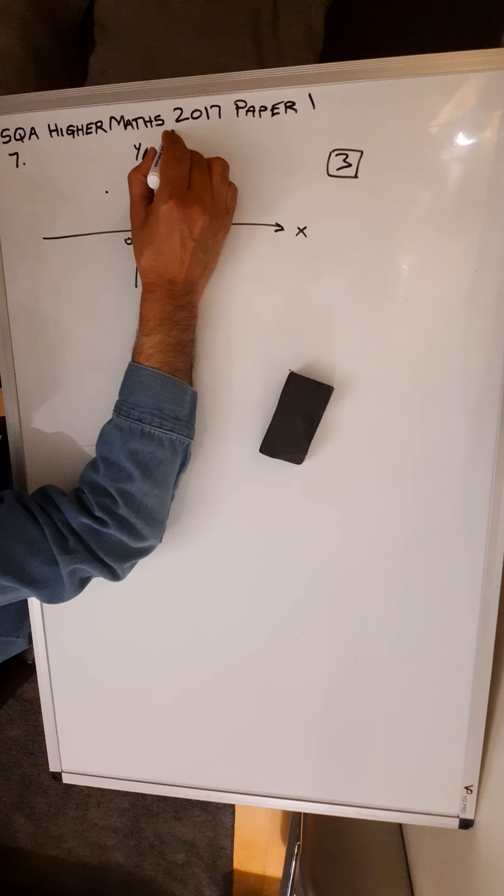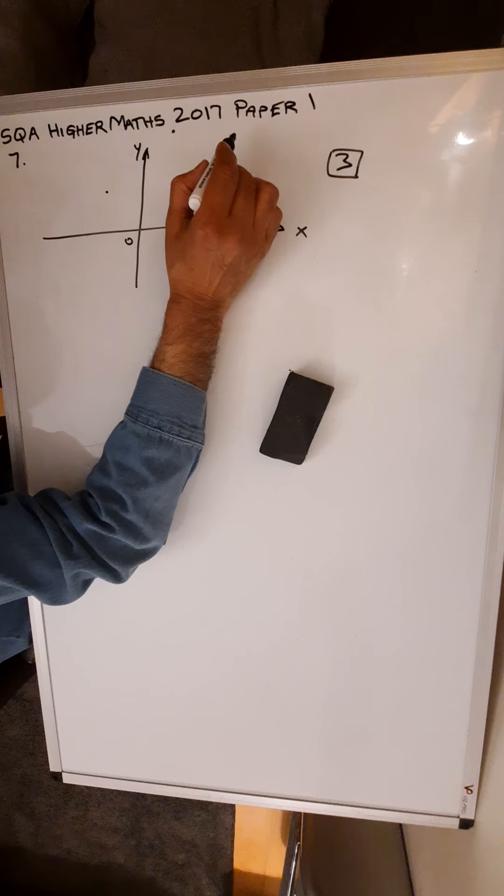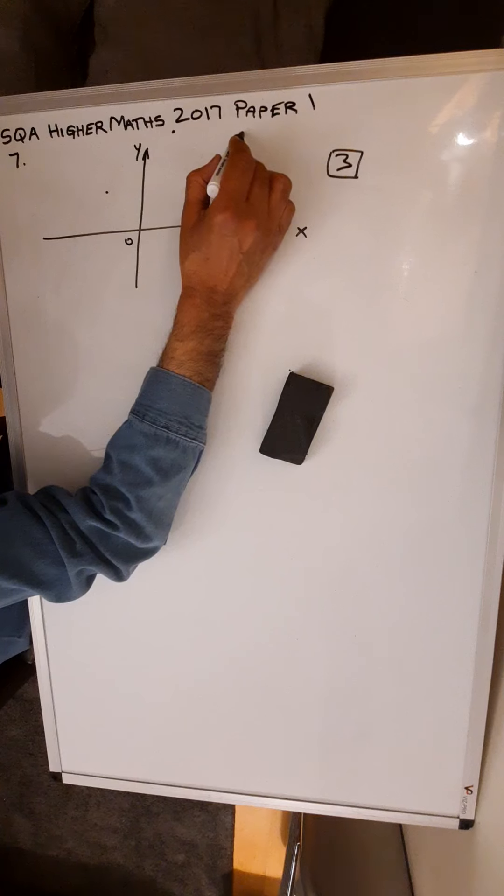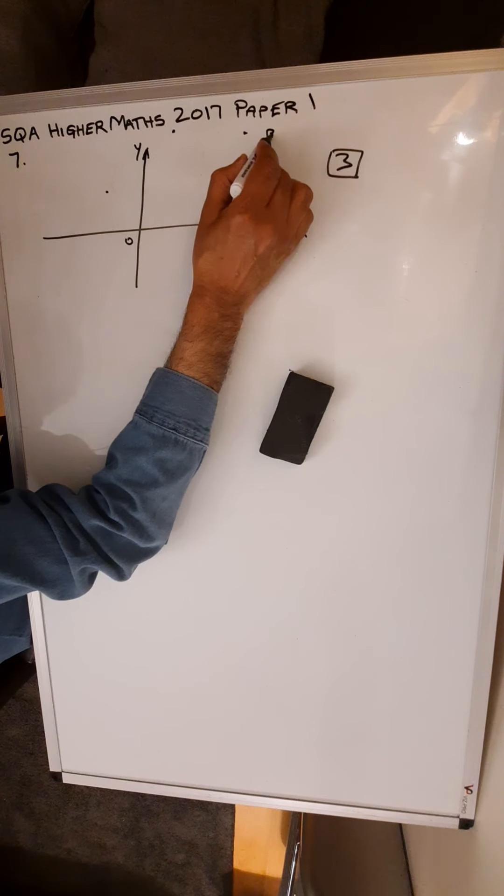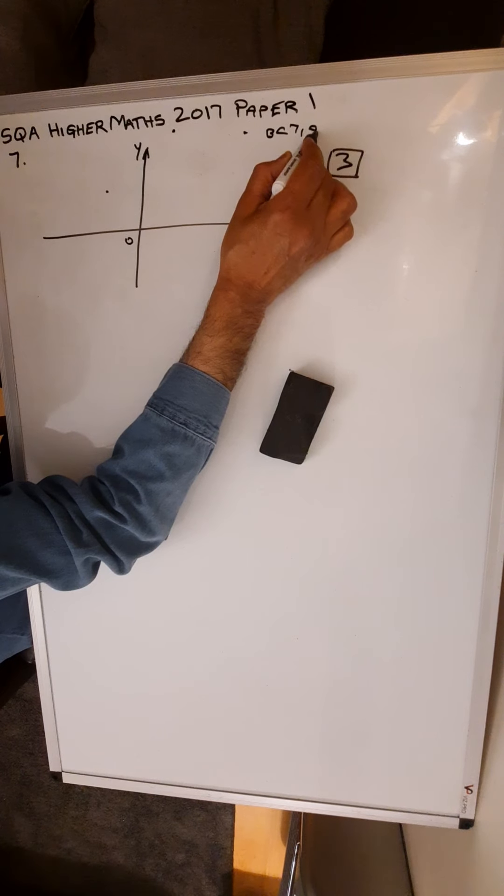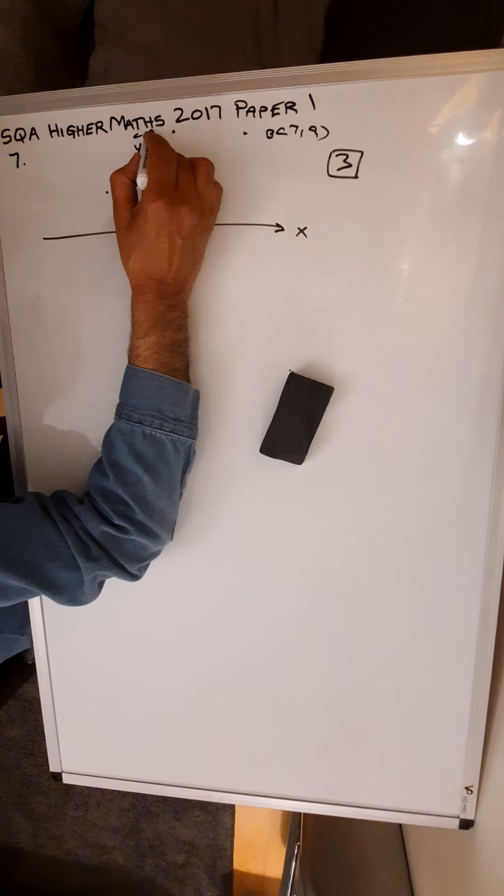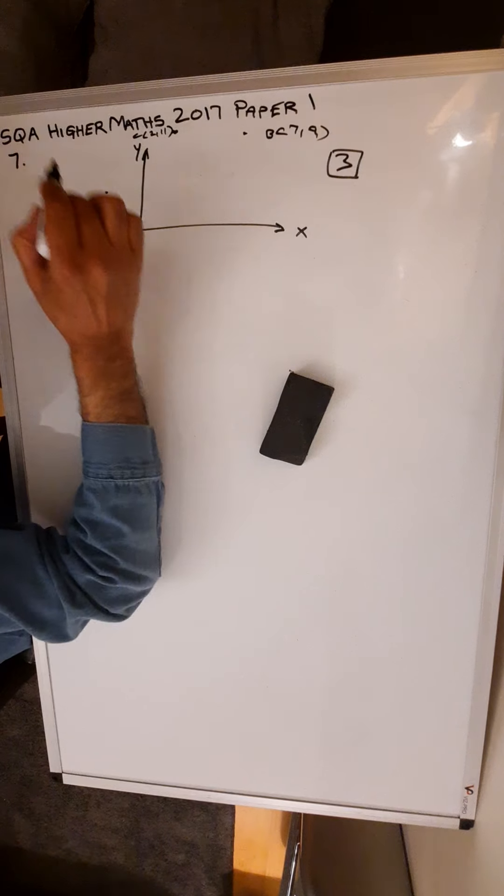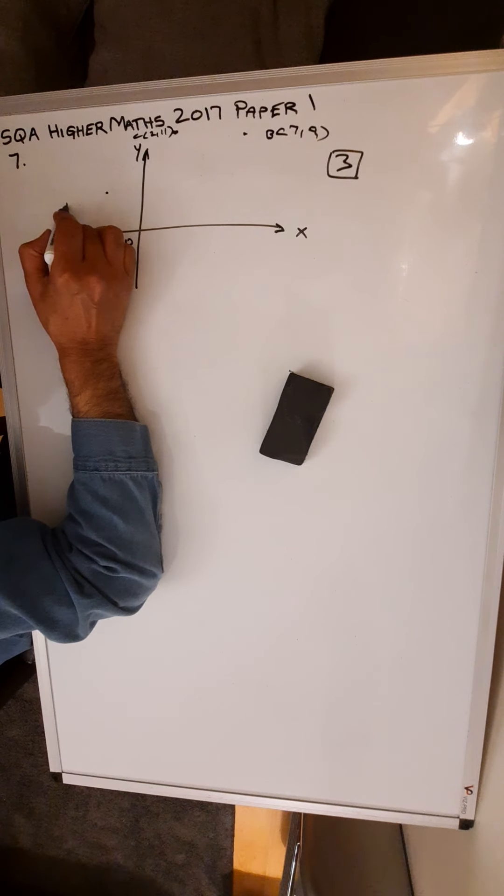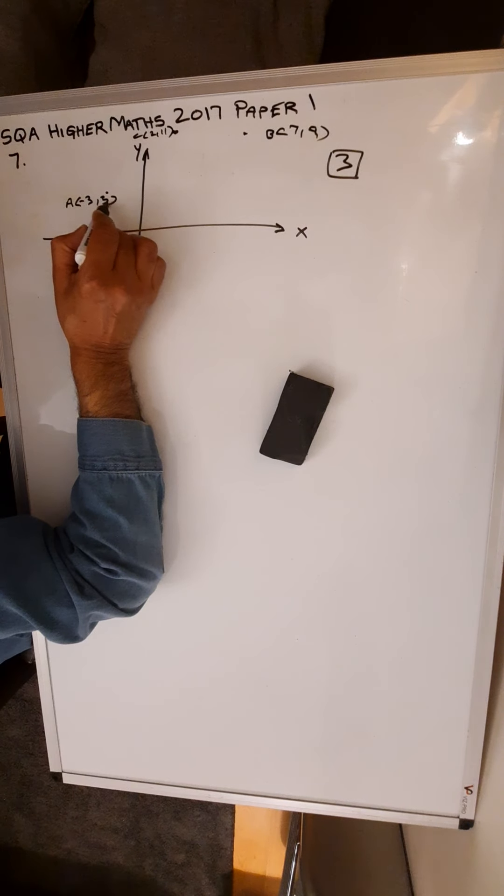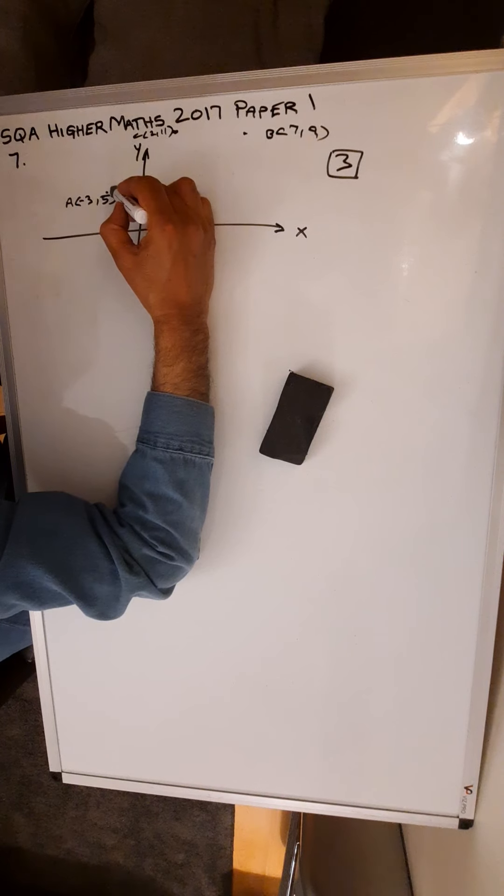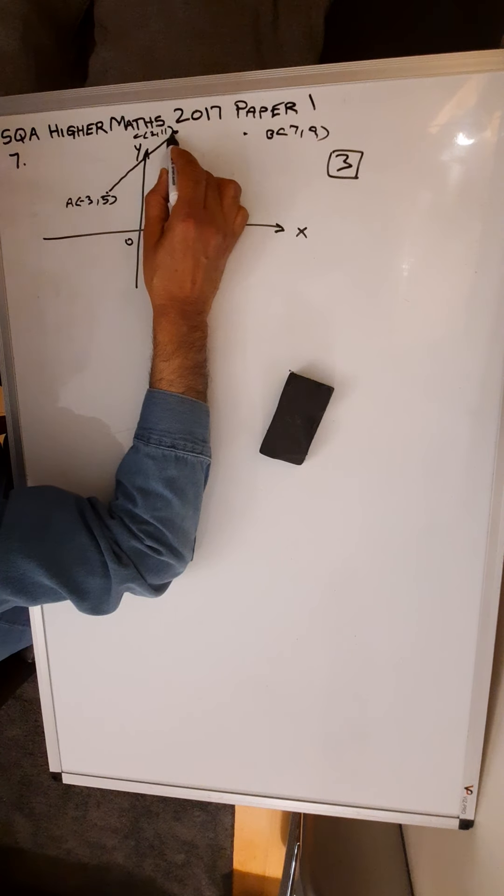C is the point (2, 11), B is the point (7, 9), and A is the point (-3, 5). So your triangle roughly is there.